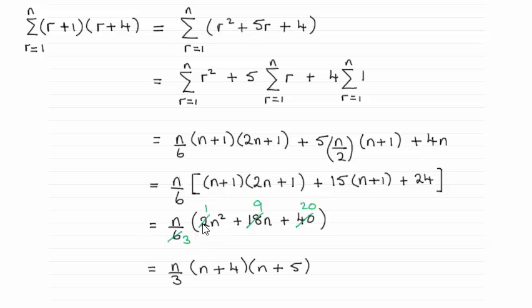Then you can see I've expanded this, looked at the n squared terms. We've got 2n squared there, the only n squared term. For n terms we've got 1n plus another 2n, that's 3n, plus another 15n there giving me 18n. And then for the constants we've got 1 here plus 15 plus the 24 which comes to 40.